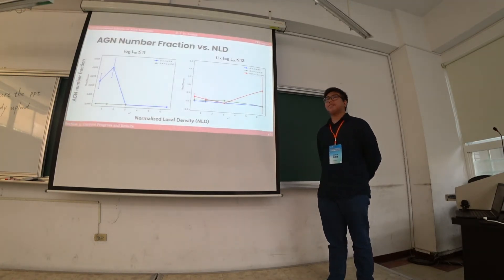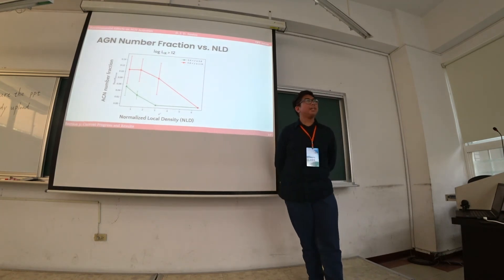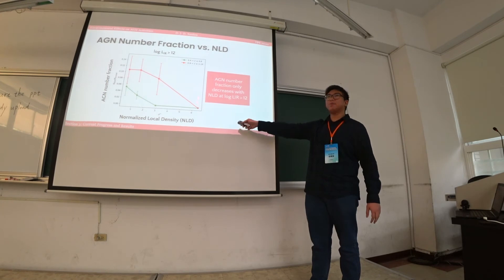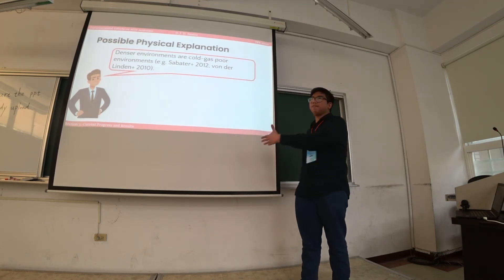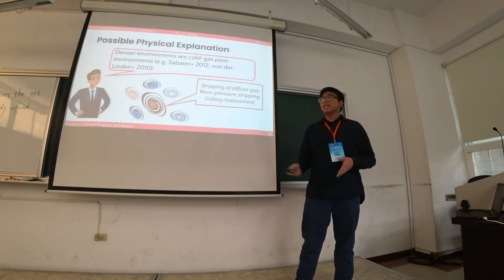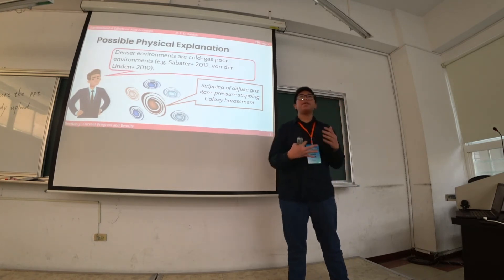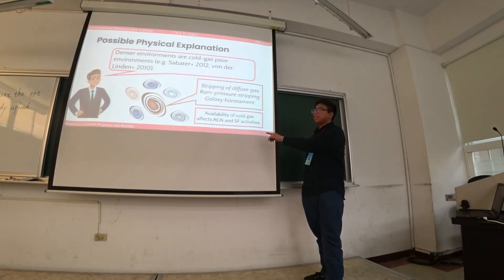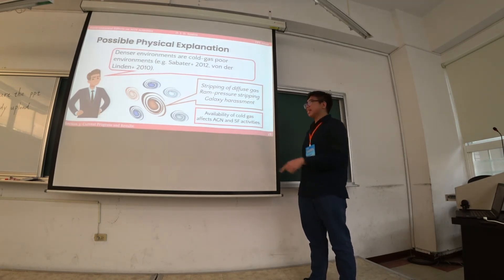Looking at AGN number fraction versus NLD, there is still no clear correlation for lower luminosities. But the AGN number fraction also decreases with NLD for the ultra-luminous sources. We cannot confirm this at the lower redshift because there are no sources there. I would like to postulate a possible physical explanation: previous studies have shown that denser environments are cold-gas-poor environments because neighboring galaxies cause environmental effects. Ram pressure stripping and galaxy harassment cause the stripping of cold gas, limiting its availability and affecting AGN and star-forming activities.